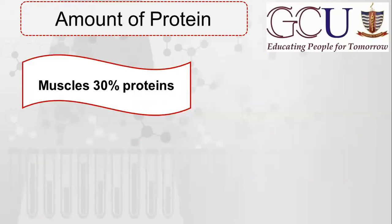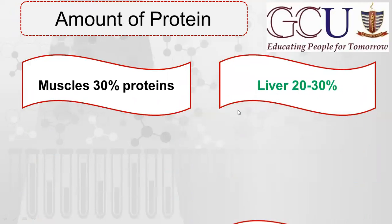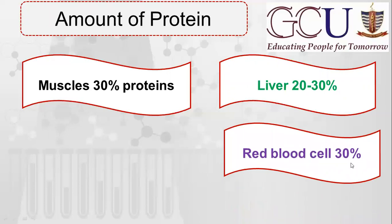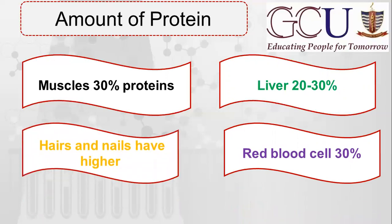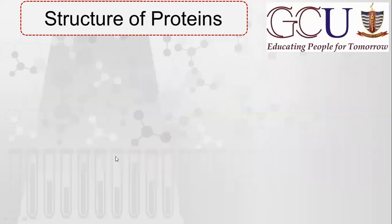Dear students, the amount of proteins in different parts of the body: muscles contain 30% proteins; collagen and ligament are also present. Similarly, the liver contains 20–30% proteins, and red blood cells contain 30% proteins. Hair and nails contain even more proteins, because in hair and nails the water content is less. In muscles, liver, and red blood cells, water content is present, but in hair and nails the water content is very low, which is why their protein content is much higher.